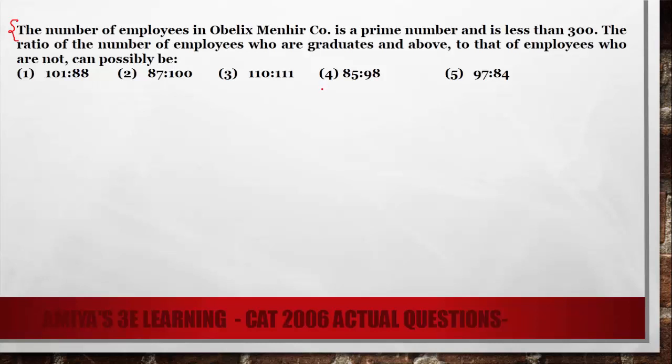I hope you have solved the question. The answer to this question is option number 5. Why? In this, we have to find the ratio of the number of employees who are graduates and above to those who are not. This means we have to find the ratio of two mutually exclusive sets.